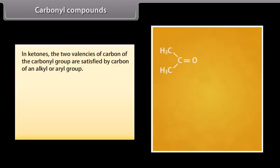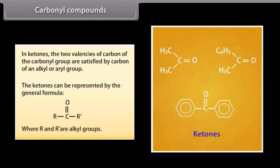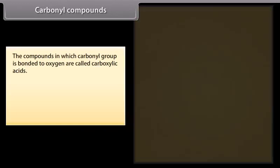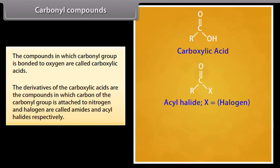In ketones, the two valencies of carbon of the carbonyl group are satisfied by carbon of an alkyl or aryl group. Ketones can be represented by the general formula R-CO-R', where R and R' are alkyl groups. The compounds in which the carbonyl group is bonded to oxygen are called carboxylic acids. Derivatives of carboxylic acids in which carbon of the carbonyl group is attached to nitrogen and halogen are called amides and acyl halides respectively.